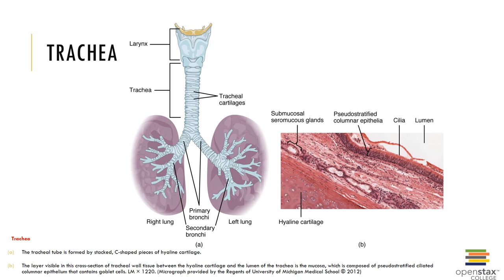For example, sympathetic stimulation relaxes the trachealis muscle, increasing the diameter of the trachea and making it easier to move air along the respiratory passageways, such as during exercise. The carina is at the bottom of the trachea and is a triangular piece of cartilage that helps to support the branching of the trachea to form the primary bronchi.